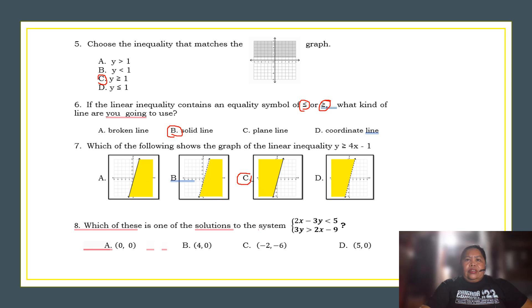Number eight. Which of this is one of the solutions to the system 2x minus 3y greater than 5 and 3y greater than 2x minus 9? If you are going to solve this, the possible solution is, of course, 0, 0. Because we always go back to the origin.